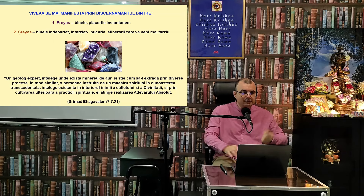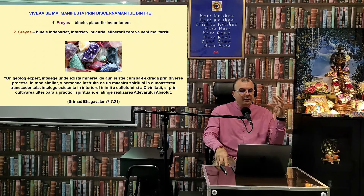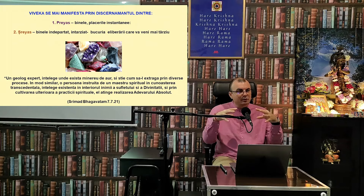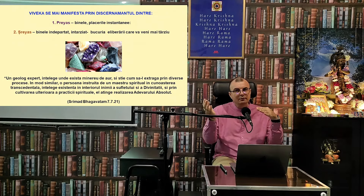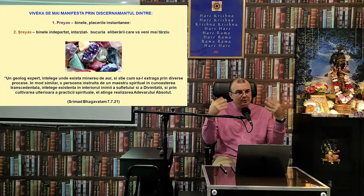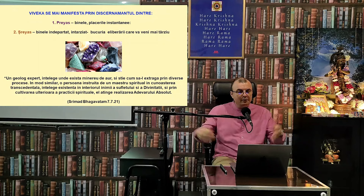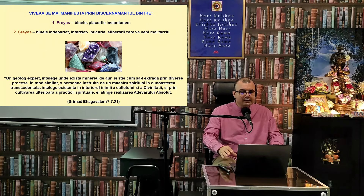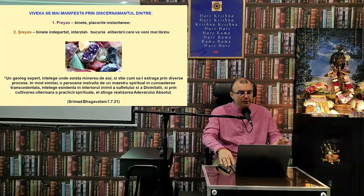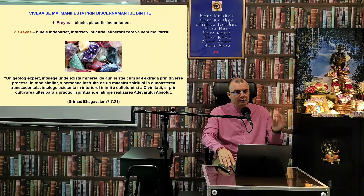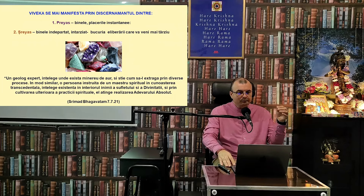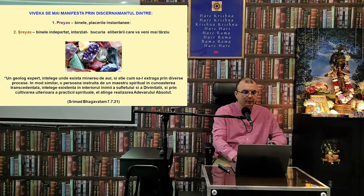Copilul cu bomboana care a mâncat-o imediat — aia era Preyas: acum mă bucur, nu mă interesează viitorul. Dar copiii care aveau inteligență s-au gândit: mai bine sacrific o bomboană și primesc trei în schimb. Shreyas înseamnă binele îndepărtat — bucuria eliberării spirituale. Un transcendentalist investește energia vieții sale în stăpânirea simțurilor ca să atingă eliberarea, ananda — beatitudinea spirituală, pe când o persoană fără aceste abilități își gratifică simțurile acum și în viața viitoare suferă din nou.